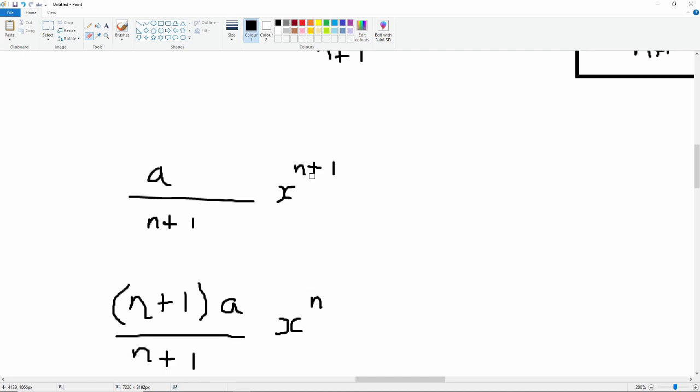And then that's x to the power n plus 1. Sorry, we're trying to get the derivative. Sorry. So that's to the power n, because, or rather, n plus 1 minus 1. So we multiply by this, and then we're taking 1 away, and that gets us our derivative.